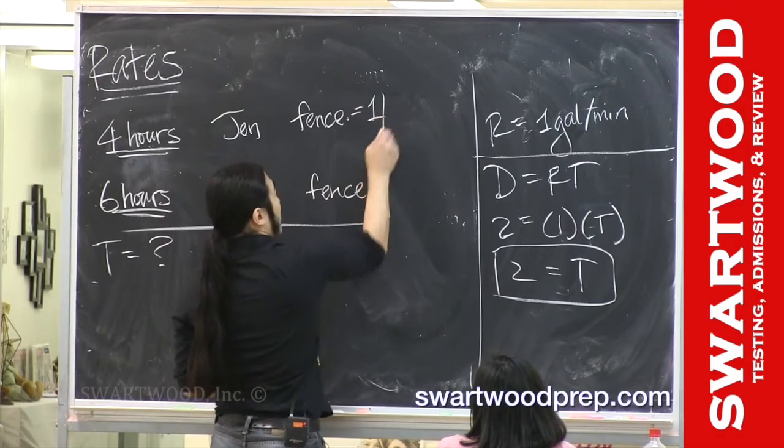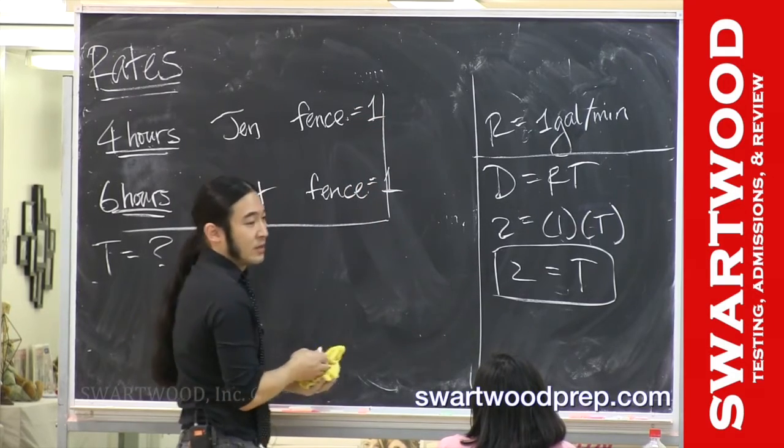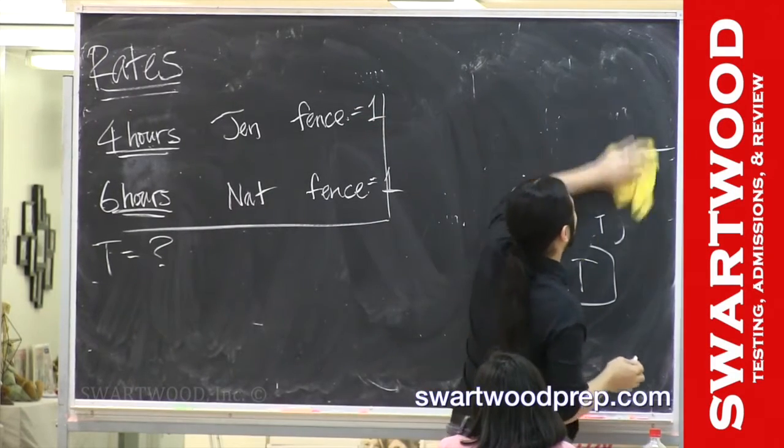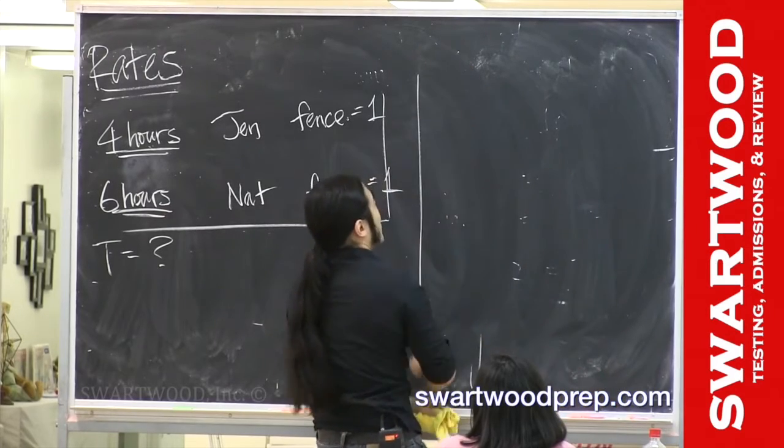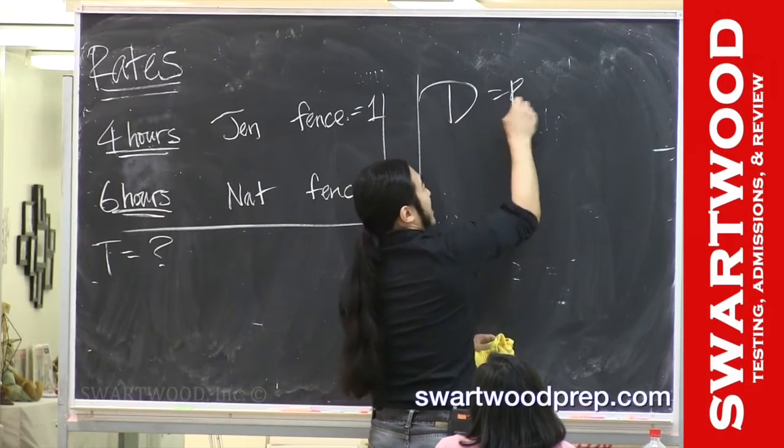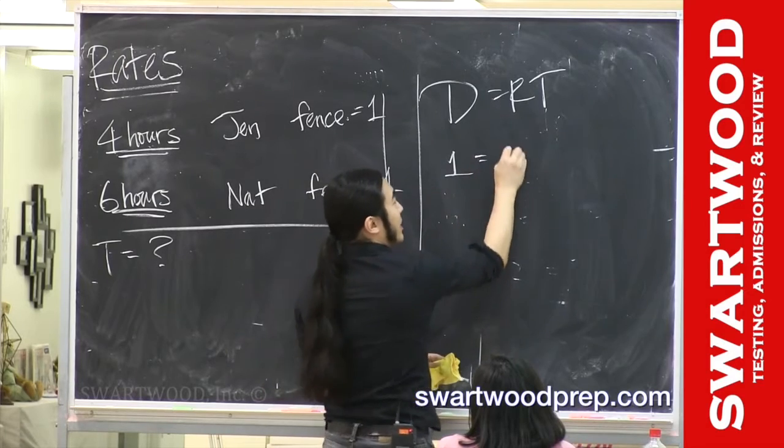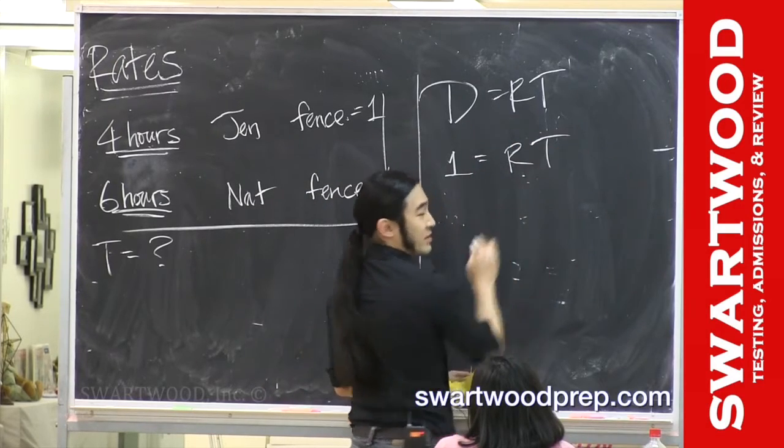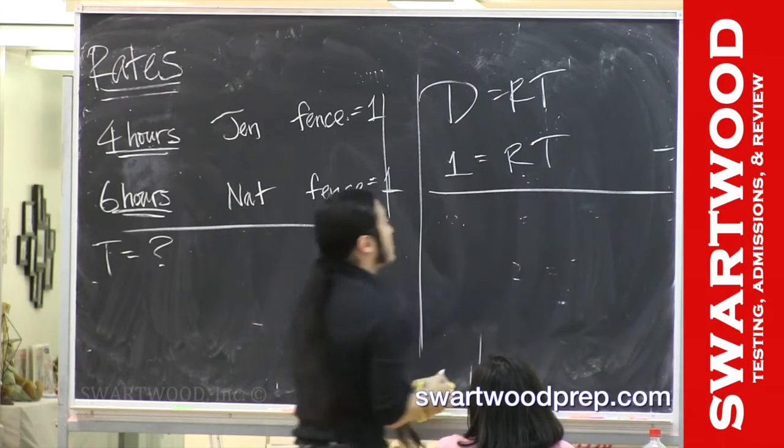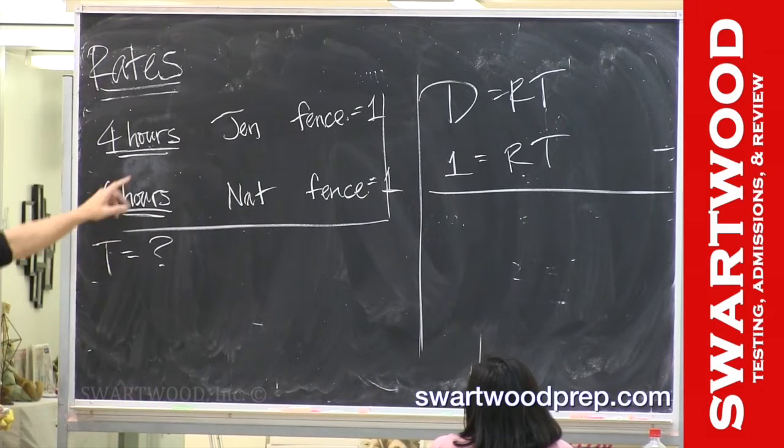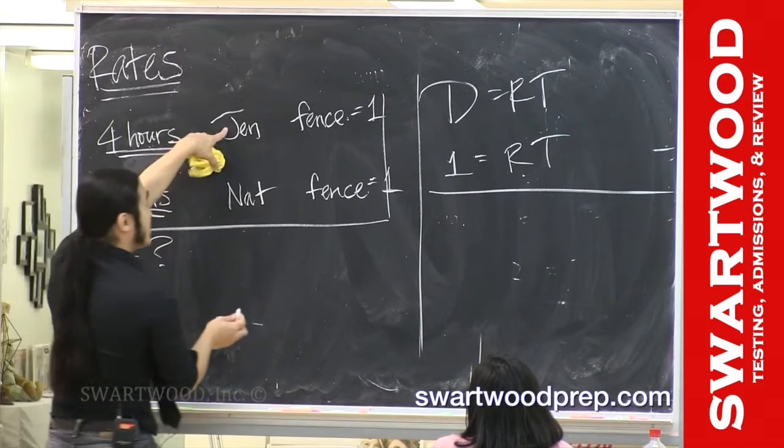So let's start backwards. Tell me what the big picture looks like. Total distance is rate times time. Total distance is one, the rate we don't know, and we need to figure out the time. So tell me what you can figure out from the individual pieces.